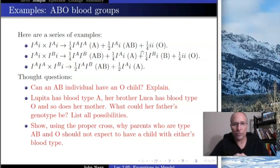Here are a few questions. First of all, can an AB individual ever have an O child? Explain. If they can, explain how. If they can't, explain why not.